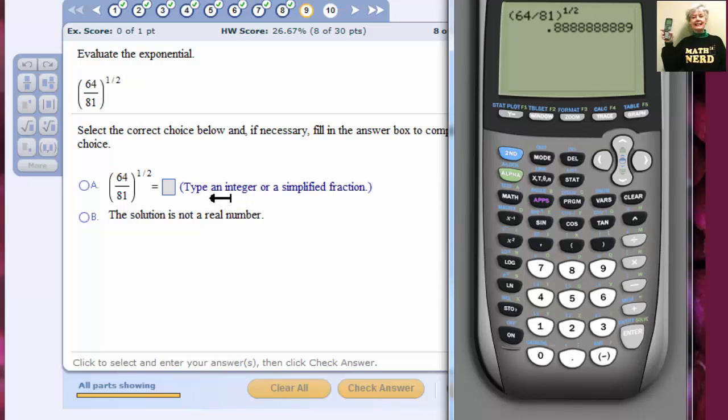Notice it says the answer needs to be an integer or a fraction, not a decimal. We can fix this. Math. Frac is right there at the top. So I hit enter and enter again. And indeed the answer is 8 ninths.